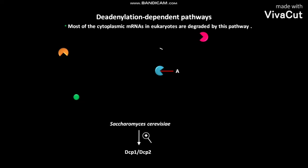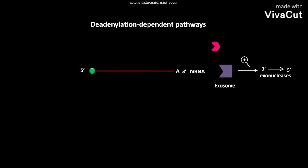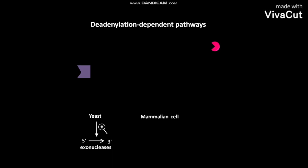The 5' to 3' exonuclease in Saccharomyces cerevisiae is XRN1. In the deadenylation-dependent pathway, the deadenylated mRNA is also exposed to the cytoplasmic exosome. The exosome contains 3' to 5' exonucleases, which then degrade the deadenylated mRNA. Yeast cells contain 5' to 3' exonucleases predominantly, while mammalian cells contain the 3' to 5' exosome predominantly.